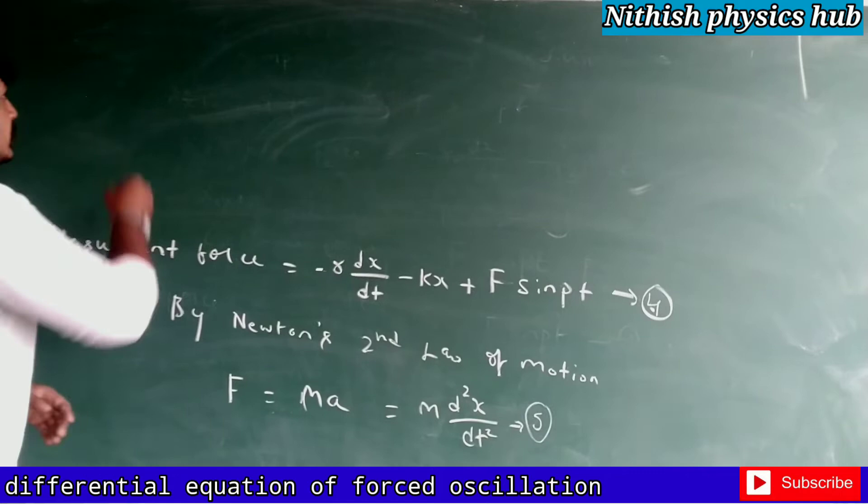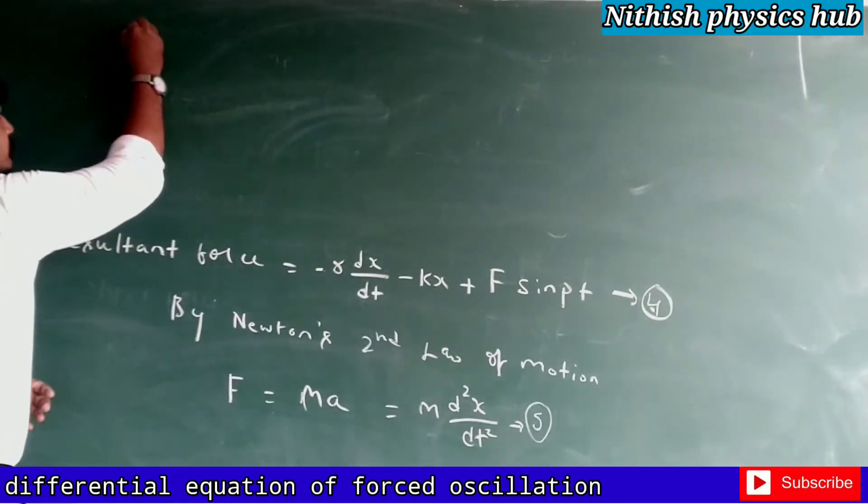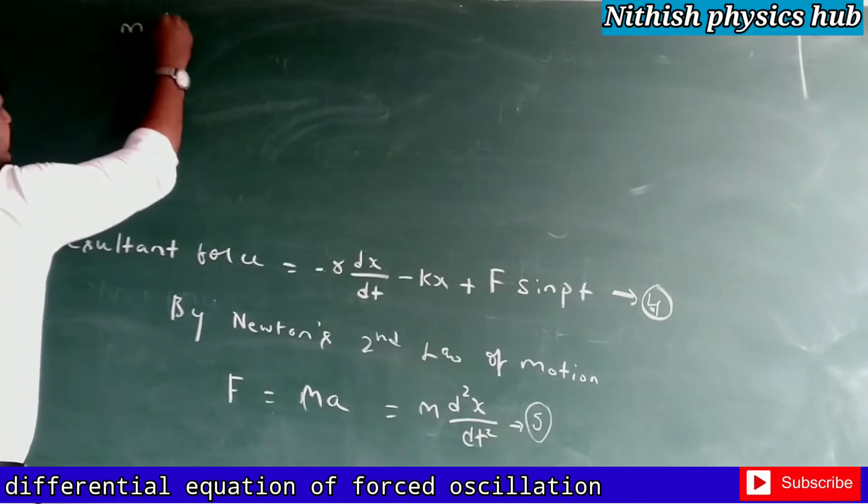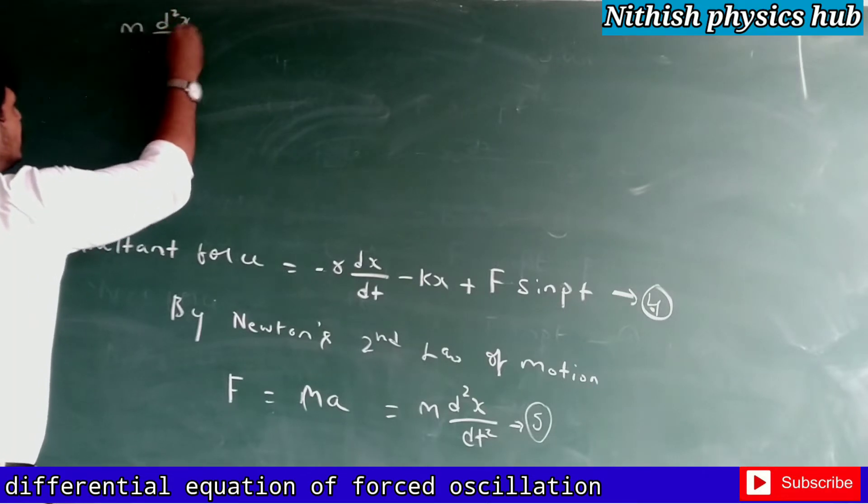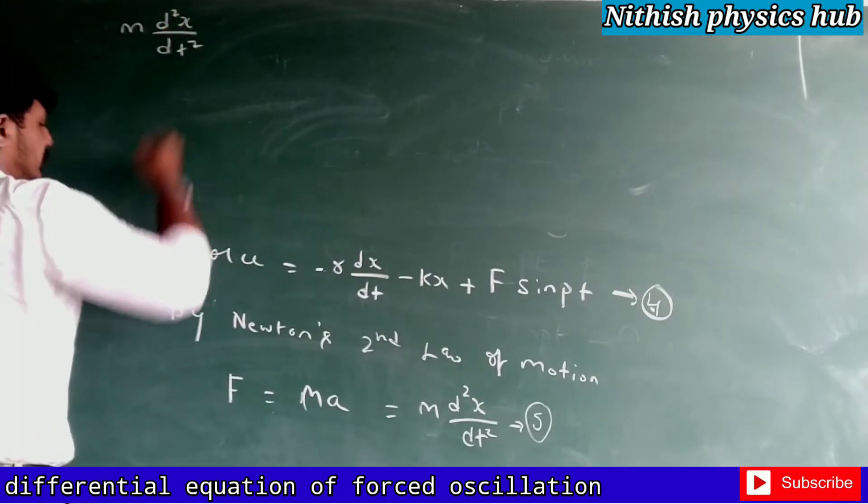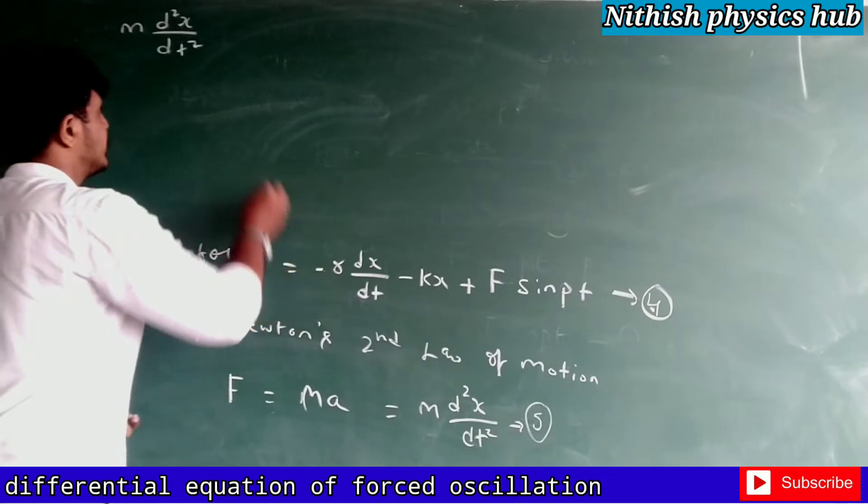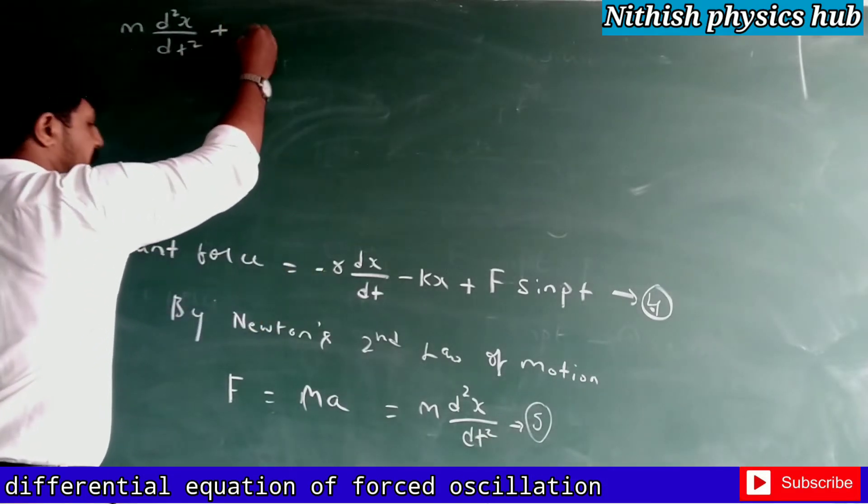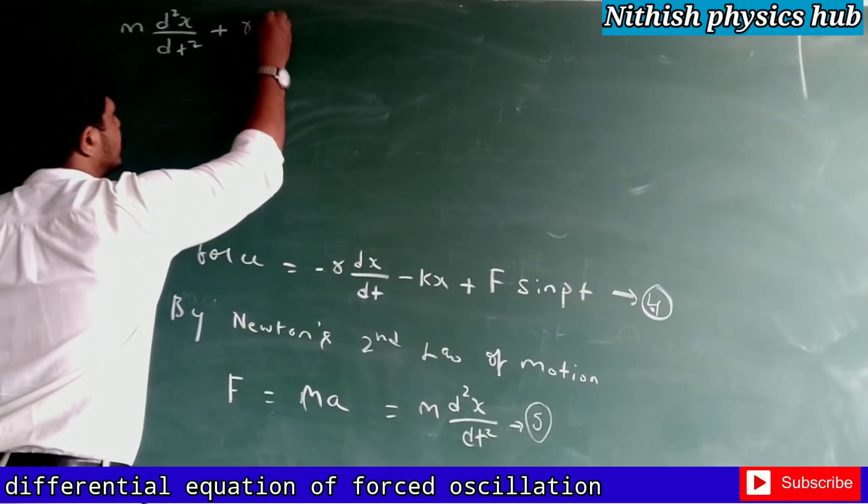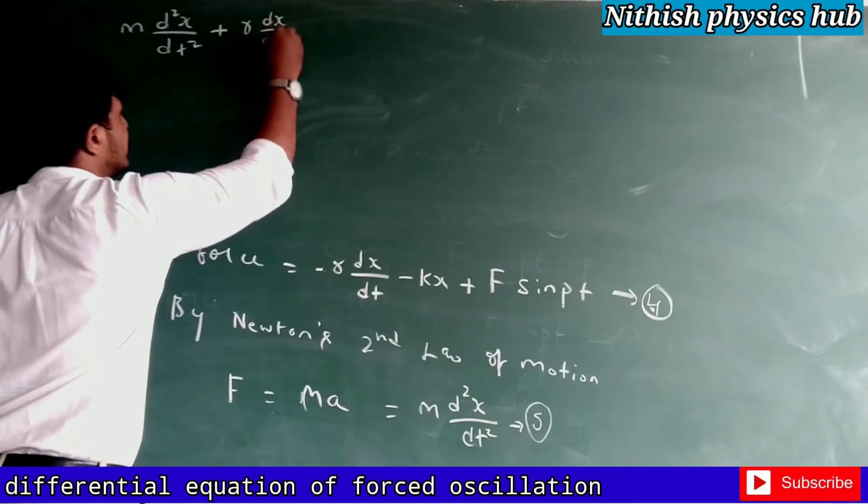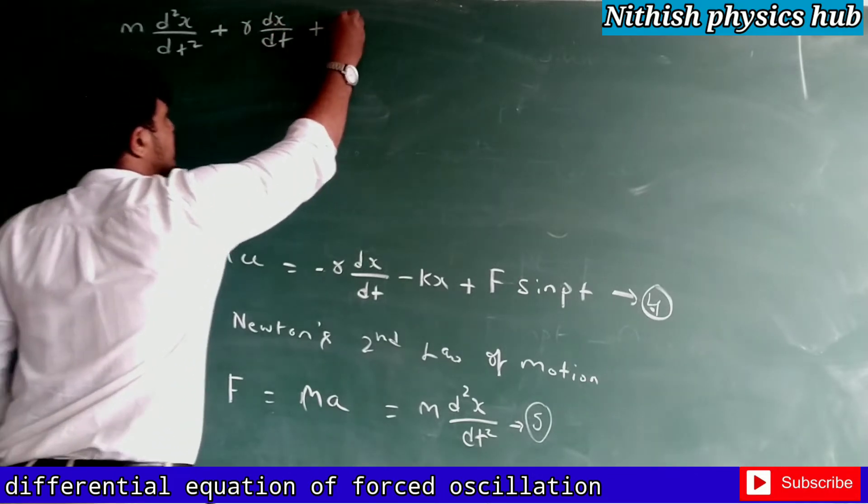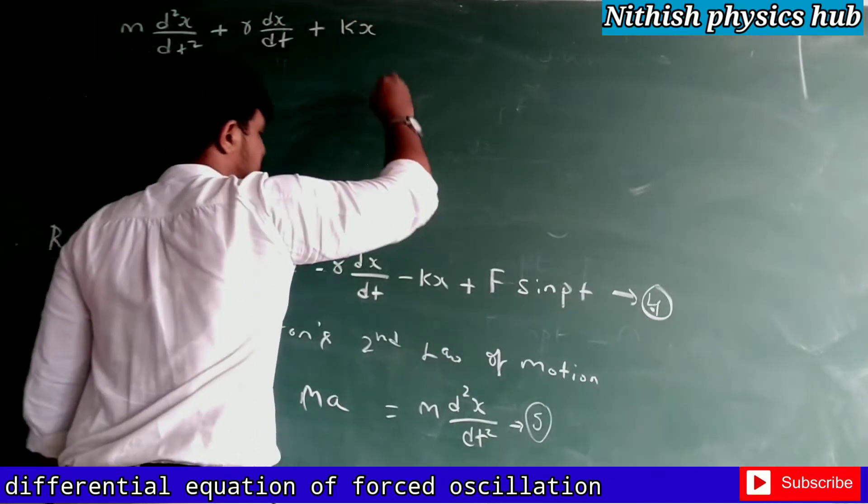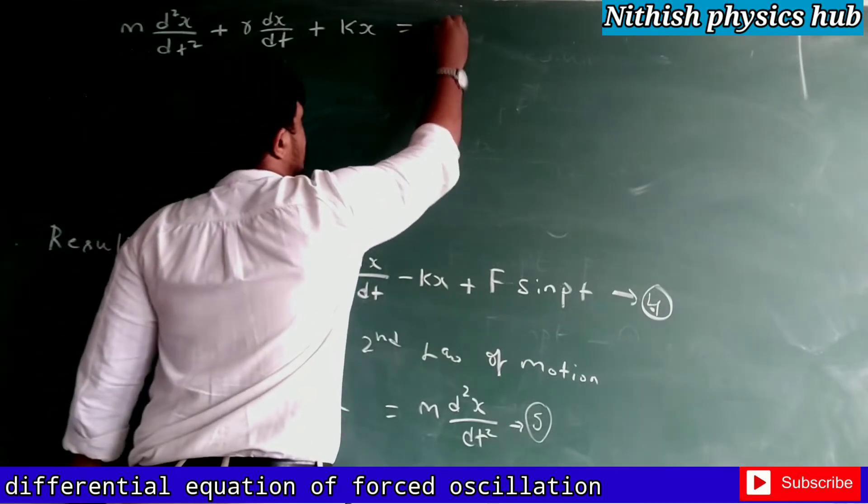So the equation will be m d²x by dt² - and here is a negative sign, if you see - this becomes positive: r into dx by dt plus k into x, which is equal to...